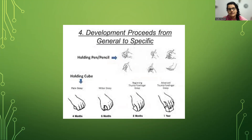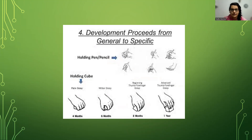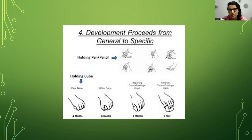Development proceeds from general to specific. All of you must have seen little children — they are not very specific with their object holding. Taking the example of holding a cube: a four-month-old child would hold the cube with the entire palm, but after growing up at the one-year stage, he or she will be able to use more fine motor skills, using fingers to hold the cube.